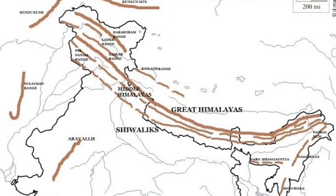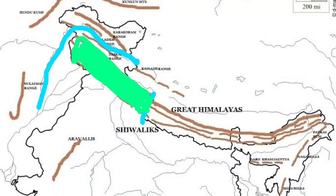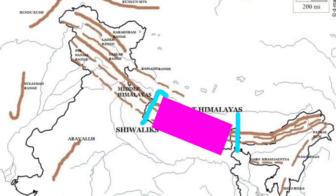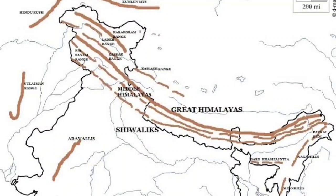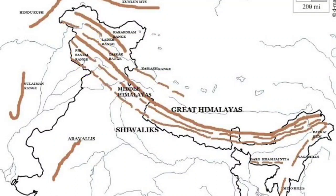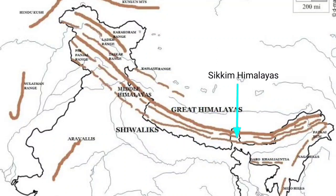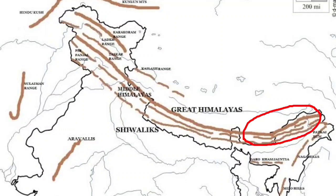The mountainous region is broadly classified into three major divisions from west to east. From the Indus River to the Kali River is the western mountainous region; from the Kali River to the Tista River is the central mountainous region; and from the Tista River to the Brahmaputra River is the eastern mountainous region. The western region is further classified into three parts: the Kashmir Himalayas, Punjab Himalayas, and Himachal or Kumaon Himalayas. The central Himalayas are mostly in Nepal, with a small part in Sikkim. The eastern part runs through Bhutan and Arunachal Pradesh, also termed the Arunachal Himalayas.